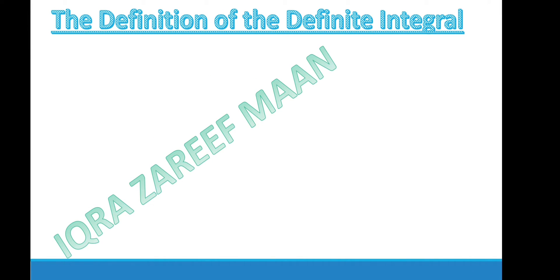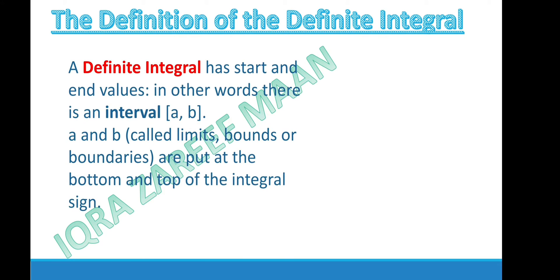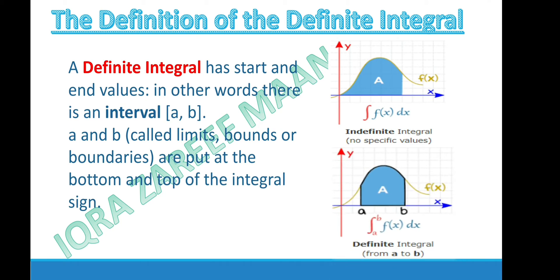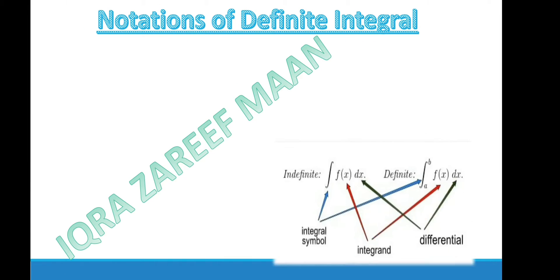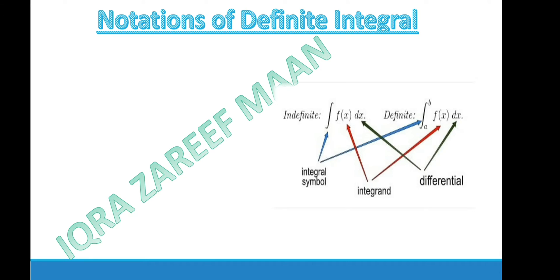The definite integral has start and end values — in other words, there is a closed interval [a, b] where a and b are called the bounds or boundaries of the integral, placed at the bottom and top of the integral sign. Unlike the indefinite integral which has no specific values, the definite integral has specific values a and b, under which we find the area of the curve f(x) between a and b. The integral sign, the function (called the integrand), and dx (the differential) form the notation.